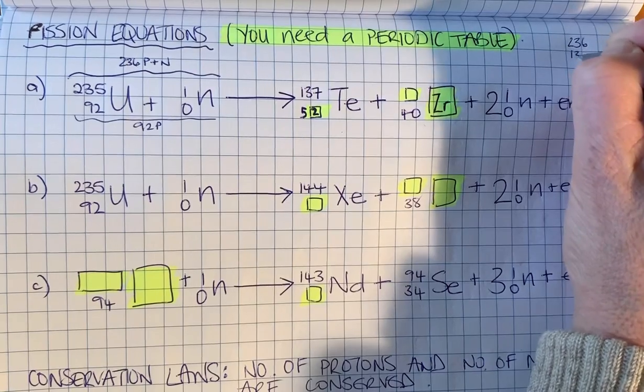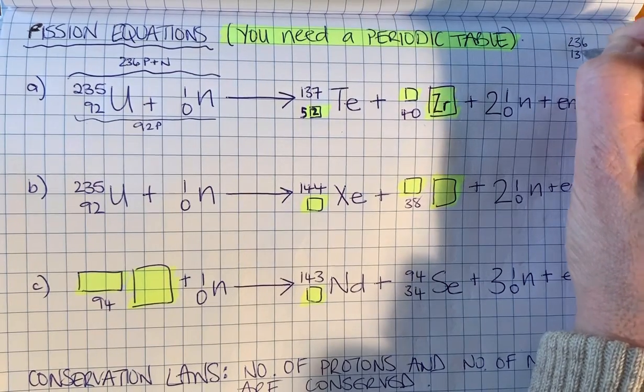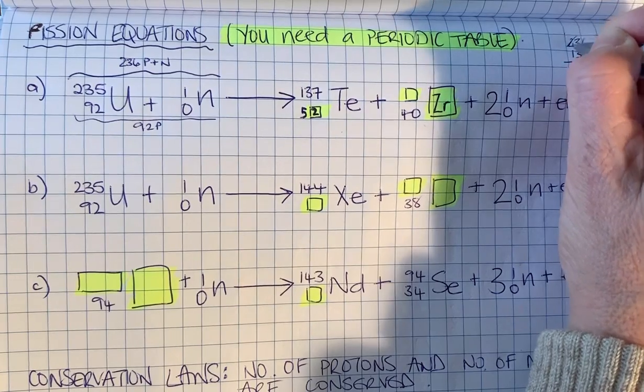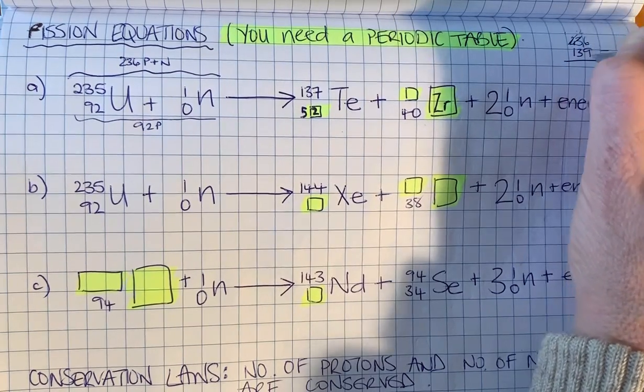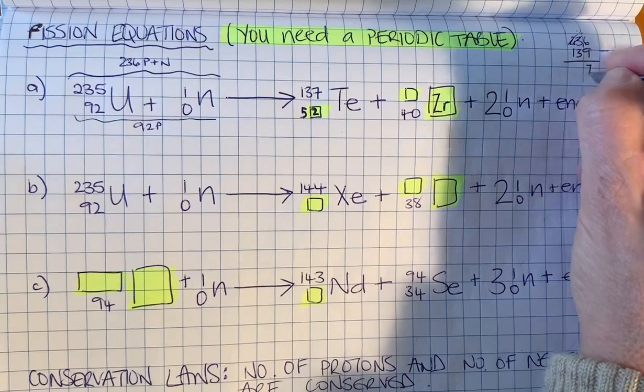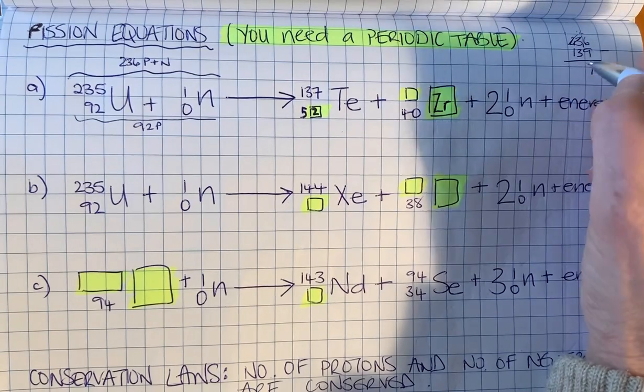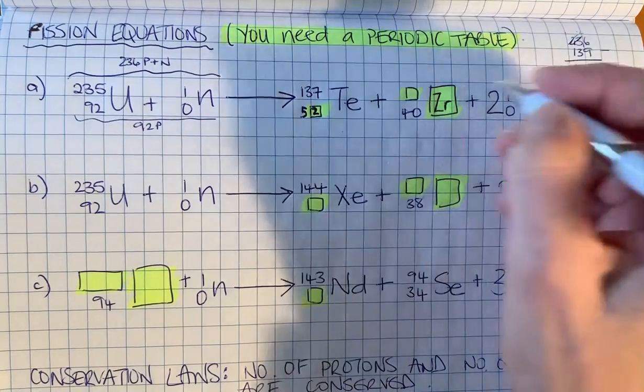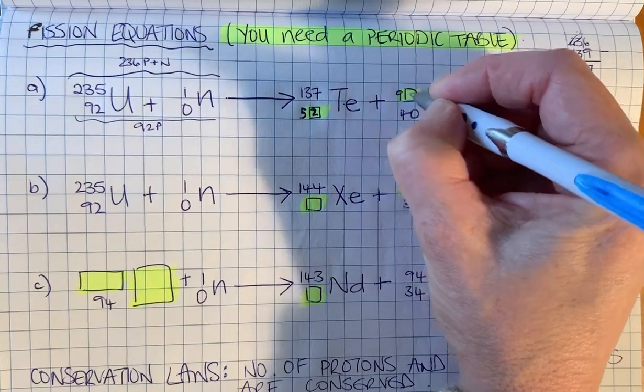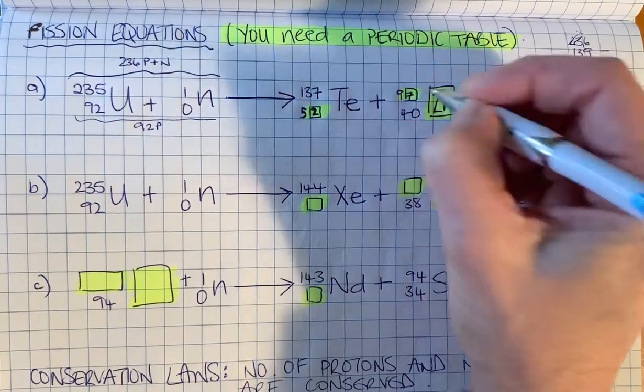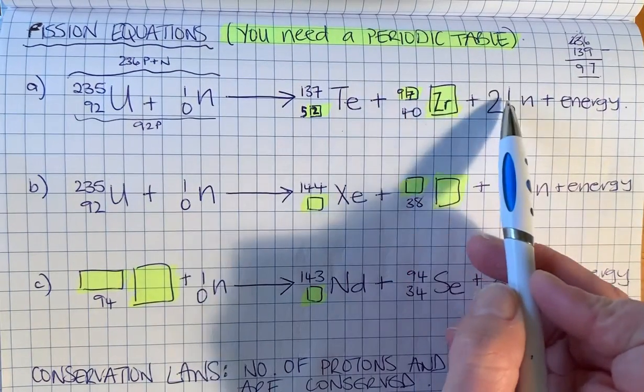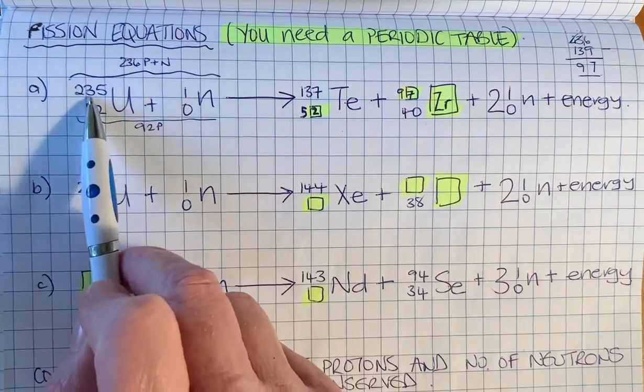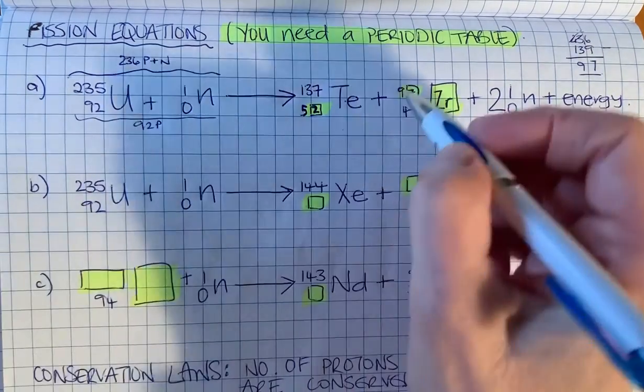236 minus 139: 16 minus 9 is 7, 12 minus 3 is 9, so we've got 97 there. 97 plus the 2 here is 99, and 99 plus 137 is 236. So we've conserved it.